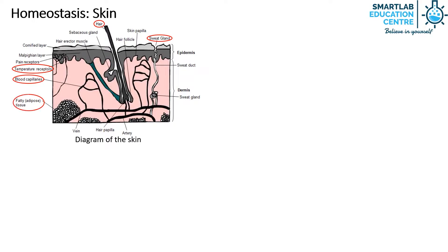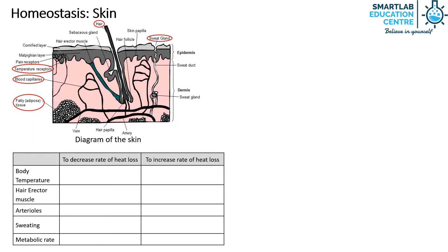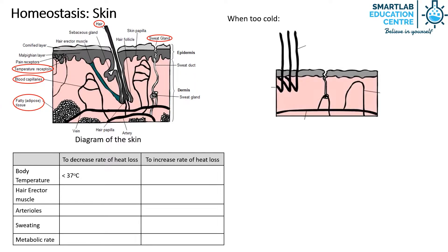fatty or adipose tissue. Next, let's look at the homeostatic mechanisms involved in the maintenance of a constant body temperature. When it is too cold, the temperature receptors detect a drop in temperature. The hypothalamus starts its warming mechanism to bring